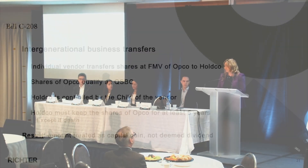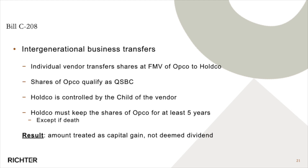As of 2021, a private members bill was introduced which alleviated the impact of Section 84.1. If certain conditions were met, the parent or vendor could benefit from capital gains treatment and apply the capital gains exemption, to the extent the shares qualified as QSBC shares or farm and fishing shares. This is notably a private members bill — not the typical route where income tax legislation is brought by the Minister of Finance through the House of Commons and Senate — it was brought by Conservative MPs and passed in 2021.